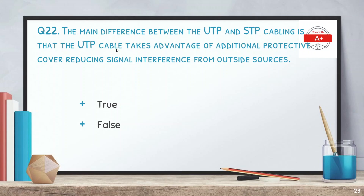Question 22: the main difference between UTP and STP cabling is that the UTP cable takes advantage of an additional protective cover reducing signal interference from outside sources. Is this true or false? The correct answer is false. This statement is actually true for STP — shielded twisted pair has an additional insulation layer, which is why it is called shielded, while UTP is unshielded twisted pair.